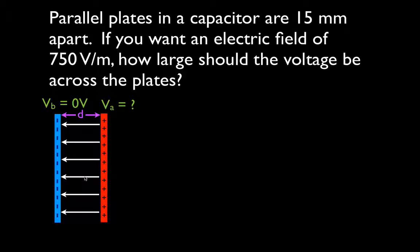Now, we're told that the plates are 15 millimeters apart, and we want to have an electric field that is 750 volts per meter, and we want to know how large should the voltage be, what potential difference should we place across those plates.